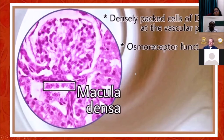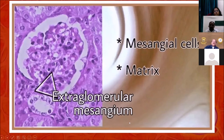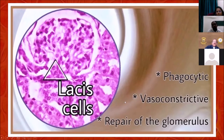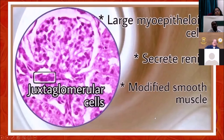Now this is the extraglomerular mesangial triangle — mesangial cells. You can see particularly in this mesangium the lacis cells, or extraglomerular mesangial cells. These are the juxtaglomerular cells — modified smooth muscle cells. The word 'epithelioid' is used because they are smooth muscle cells which have been modified for a particular regulatory function.